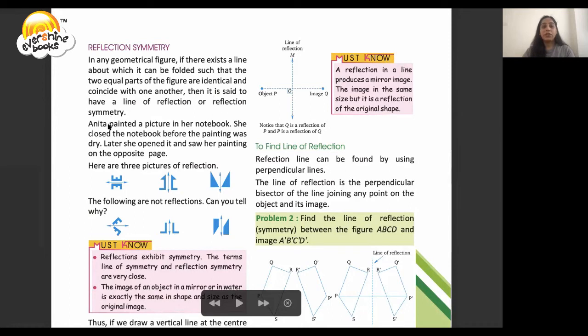If the two equal parts of the figure are identical and coincide with each other, then it is said to have a line of reflection or reflection symmetry. Choose some colors and make sure you have closed that, and when you open it, the same figure appears on the other side of the paper. This is called reflection symmetry.